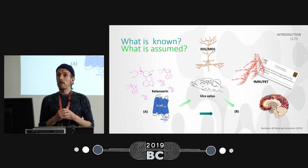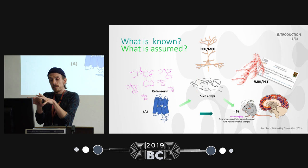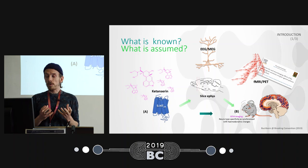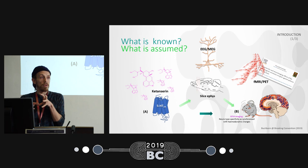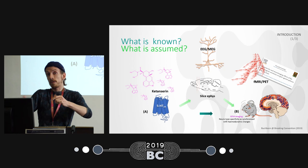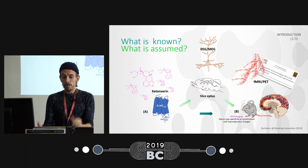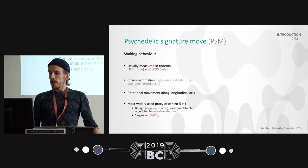What we want to do is investigate this psychedelic signature move in rats using a technique called genetically encoded voltage imaging. This allows us to make neuron-specific measurements and differentiate them from blood flow, so we can look at both at the very same time, overcoming the gaps that exist in human research.